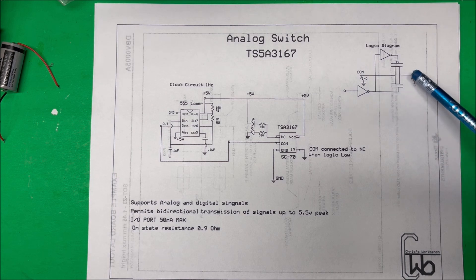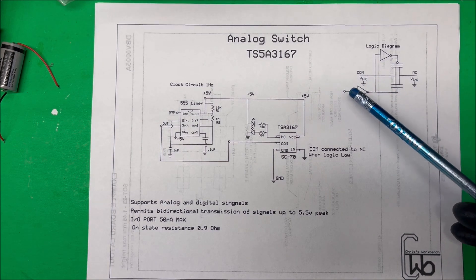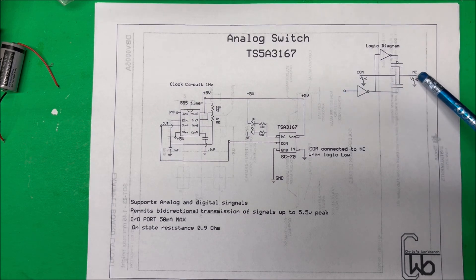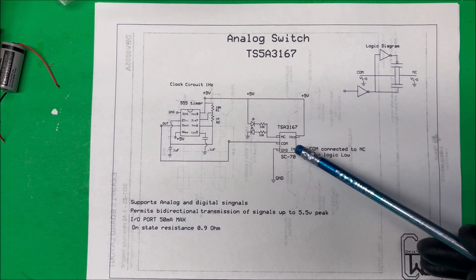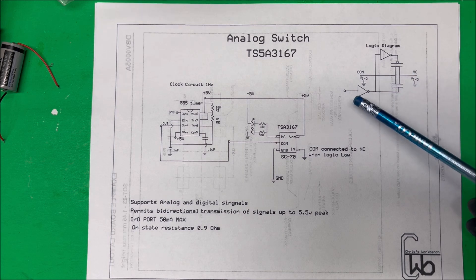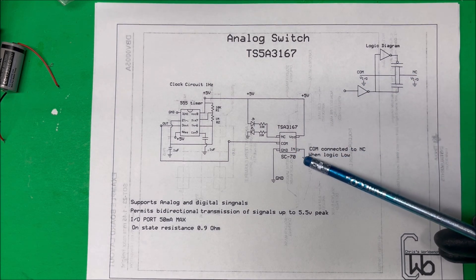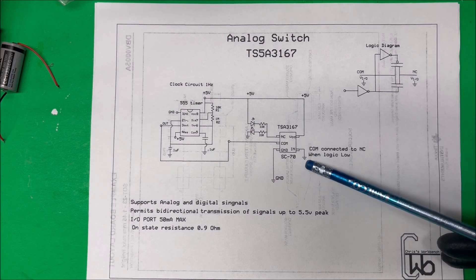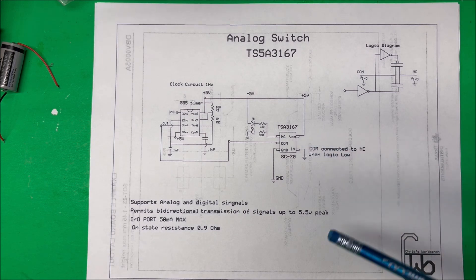It's a normally closed switch. This is your input here. When this is low, then the switch is closed. When this goes high, the switch opens up. Now you can't leave this floating though because it'll turn off if you just touch it or something. So on here I have it grounded. I could put a 10k resistor there, and then to turn it off I would just bring that up to VCC.